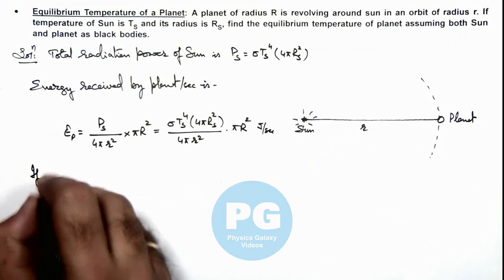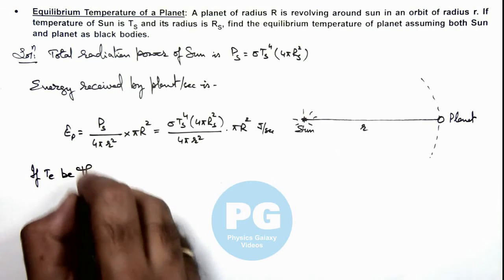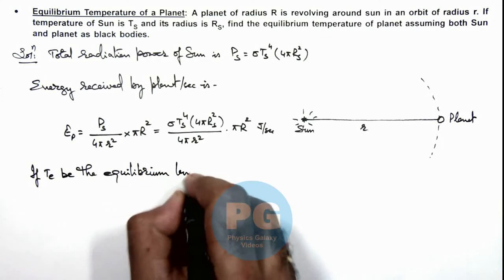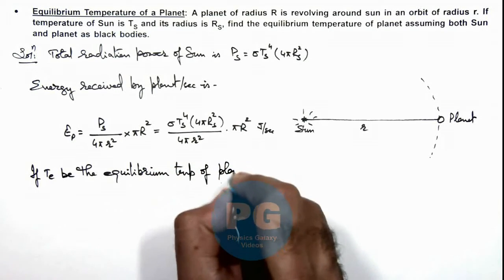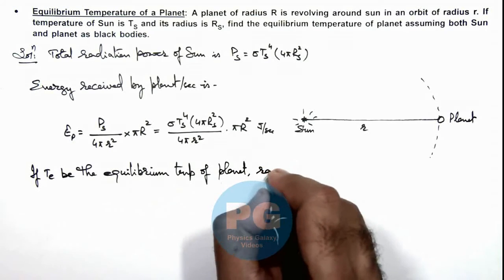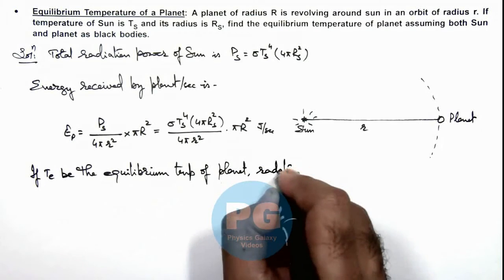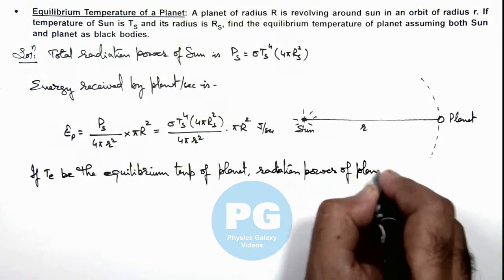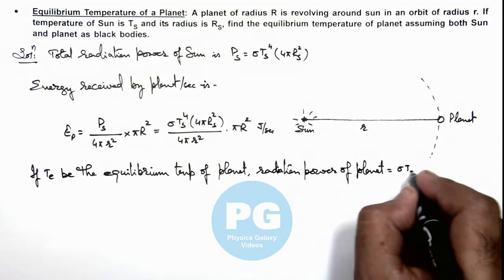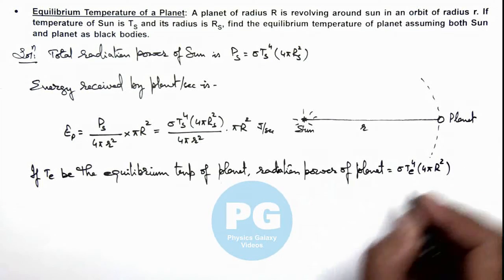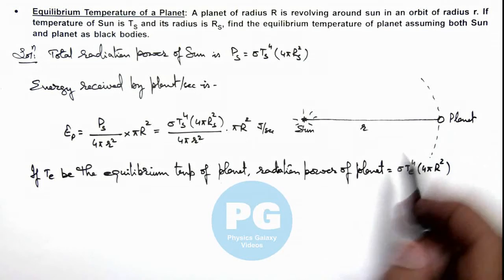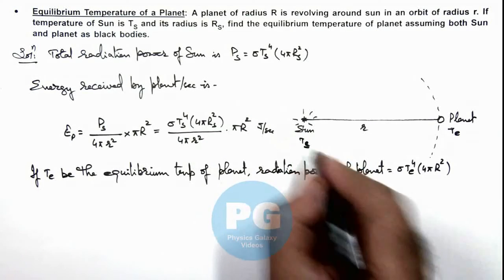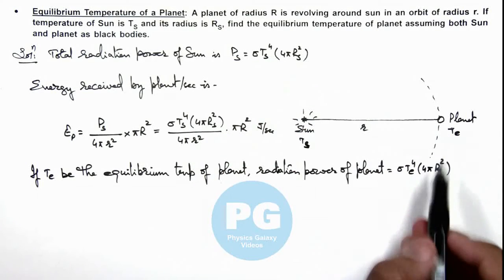Now we can write: let Te be the equilibrium temperature of the planet. We can also write the radiation power of the planet to be equal to sigma Te to the power 4, multiplied by 4 pi r squared, since we again consider the planet to be a black body at temperature Te, just as we calculated the radiation power of the sun.